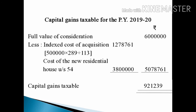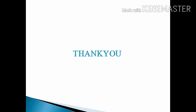Under Section 54, the cost of the new residential house is Rs. 38,00,000, which is exempt. So the computation is: Full Value of Consideration Rs. 60,00,000, less Indexed Cost of Acquisition, less Section 54 exemption (cost of new residential house), giving a total deduction of Rs. 50,78,761. Therefore, the taxable Capital Gains comes to Rs. 9,21,239. Hope you all understand this problem.